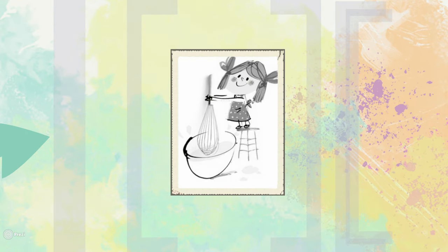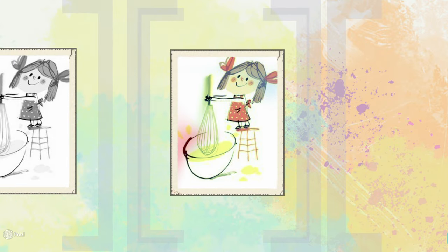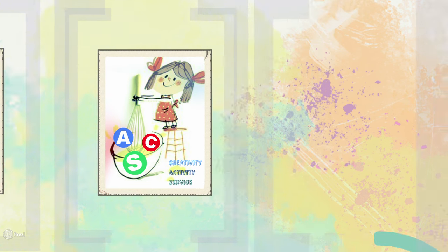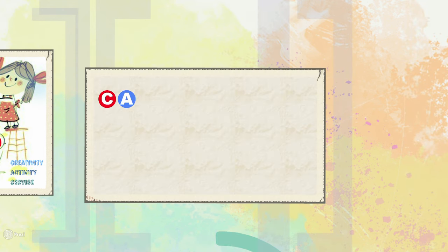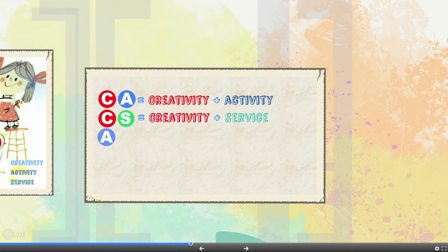In the beginning of grade 11, you design your own CAS program. You choose and combine different activities that belong to C, A, S, or combinations such as creativity and activity, or activity and service.